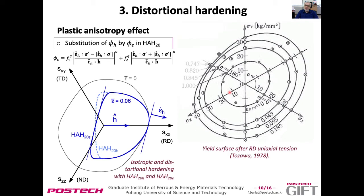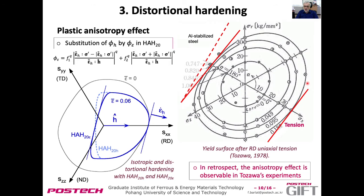In retrospect, Professor Tozawa observed the same feature. For a steel pulled in uniaxial tension, there is some flattening, and this flattening is not orthogonal to the loading direction but is parallel to the tangent of the yield surface. We already had this in Professor Tozawa's experiments, but we noticed it only after doing the crystal plasticity simulation.